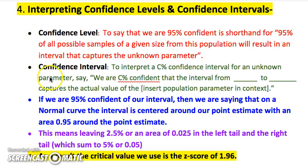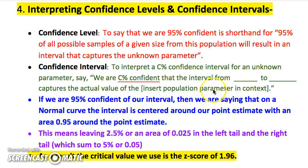What the confidence level means: 95% confident means 95% of all possible samples of a given size from this population will result in an interval that captures the unknown parameter. So 95% of the time, in the long run, if we kept generating confidence intervals, 95 out of every 100 would tend to catch the true value. To interpret this, we say: we are C% (95% in this case) confident that the interval from lower bound to upper bound captures the actual value of the parameter we're trying to measure.